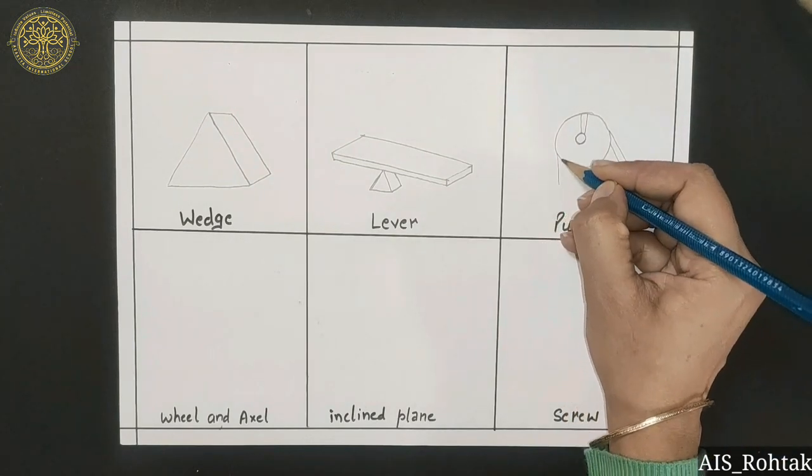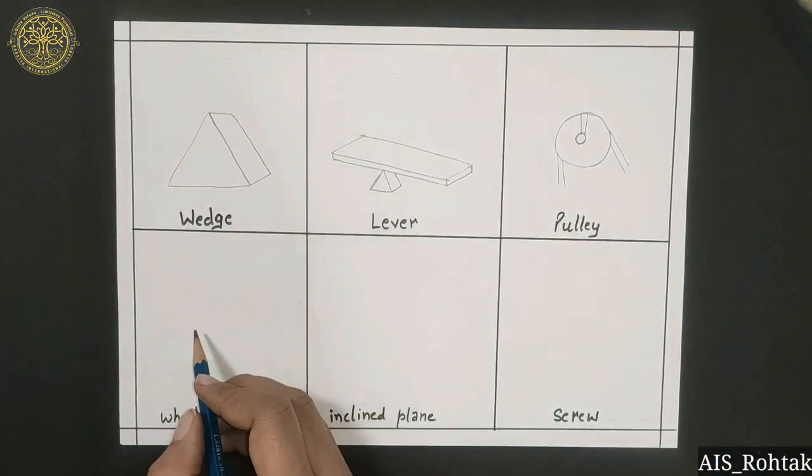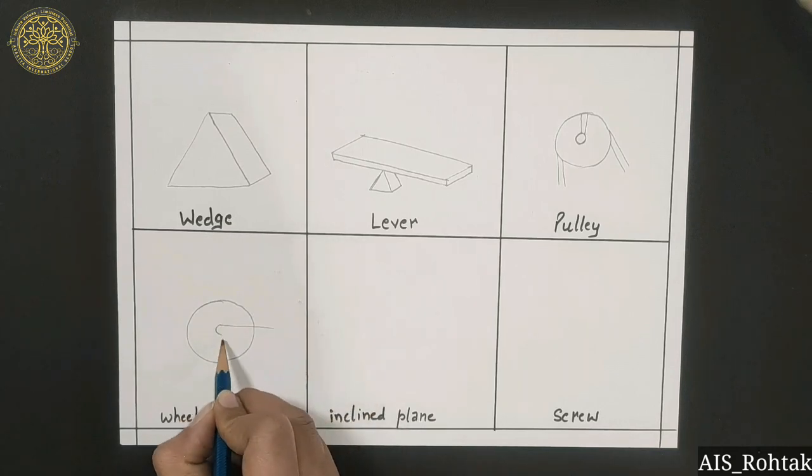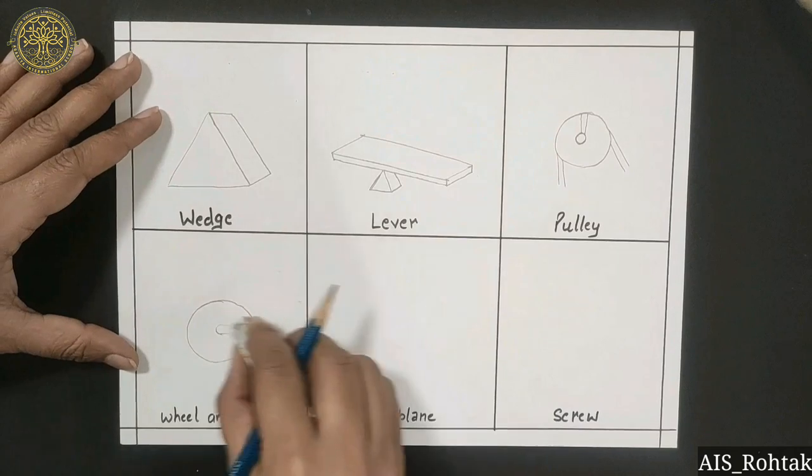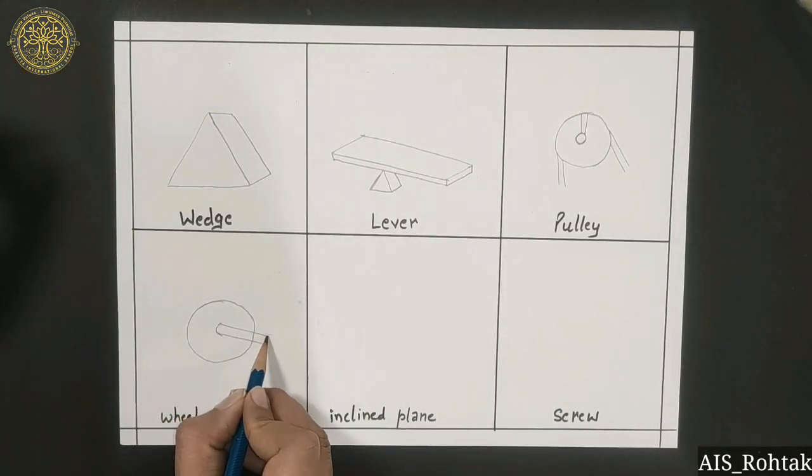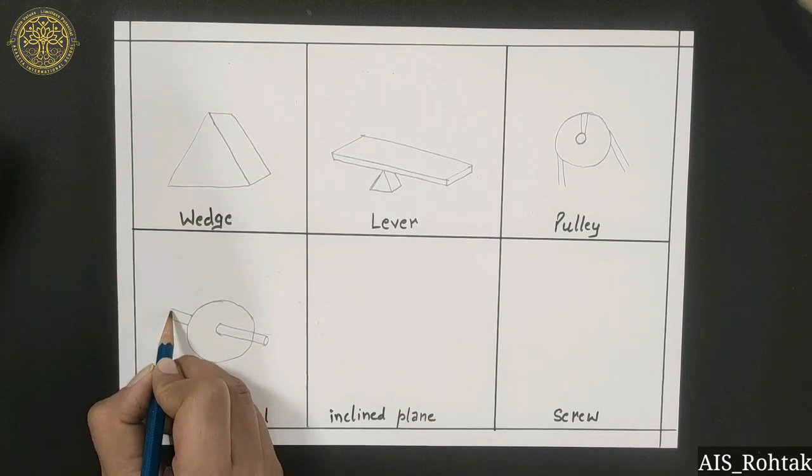circle, and draw some rope like this. Fourth one is wheel and axle. For this we draw a circle and draw a rod in between the circle like this with the help of some straight lines.